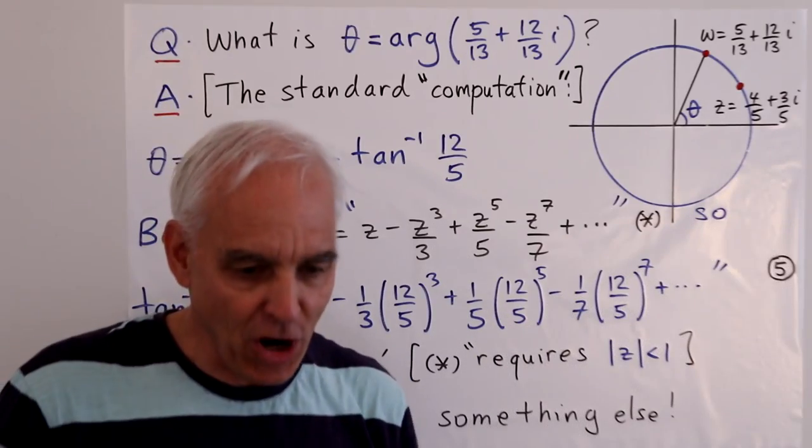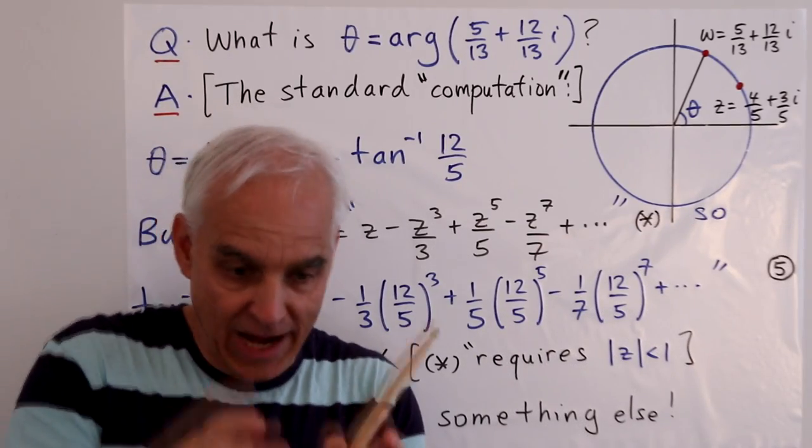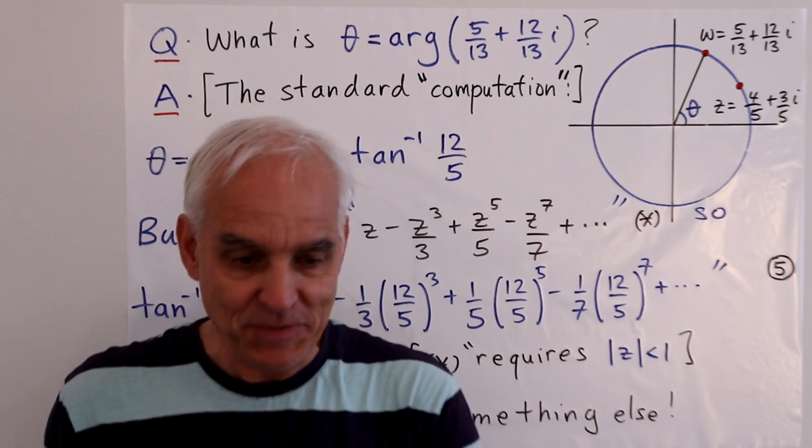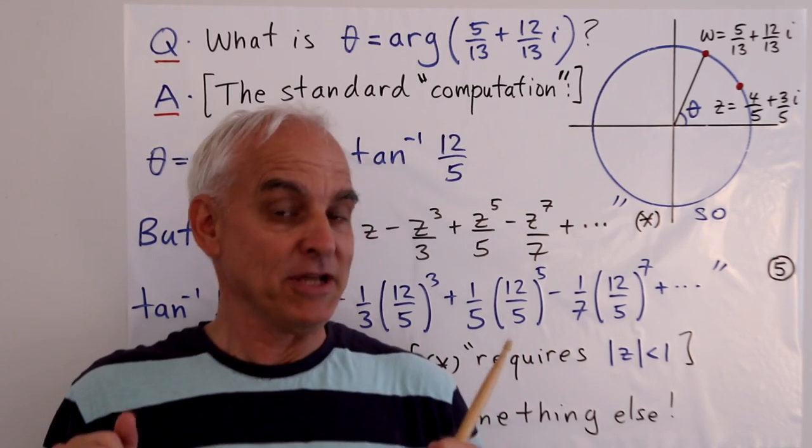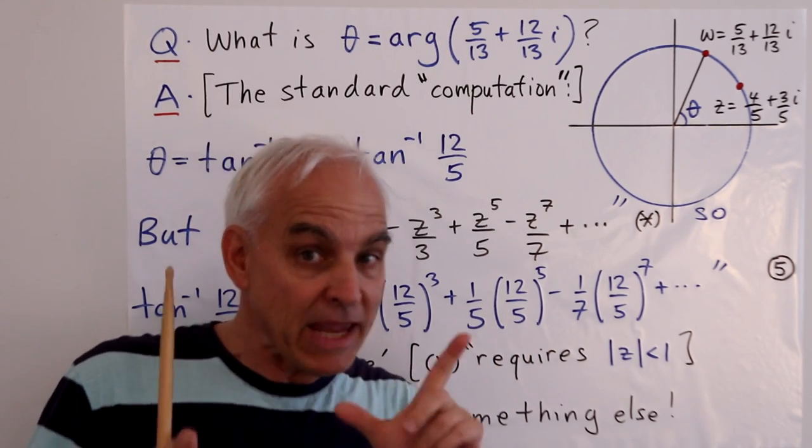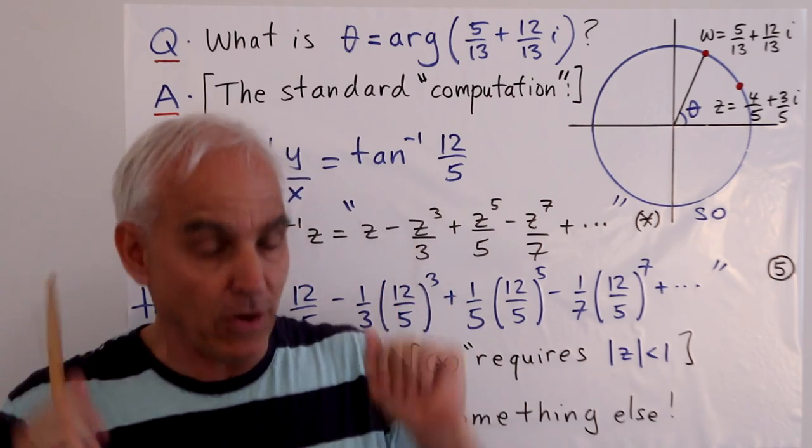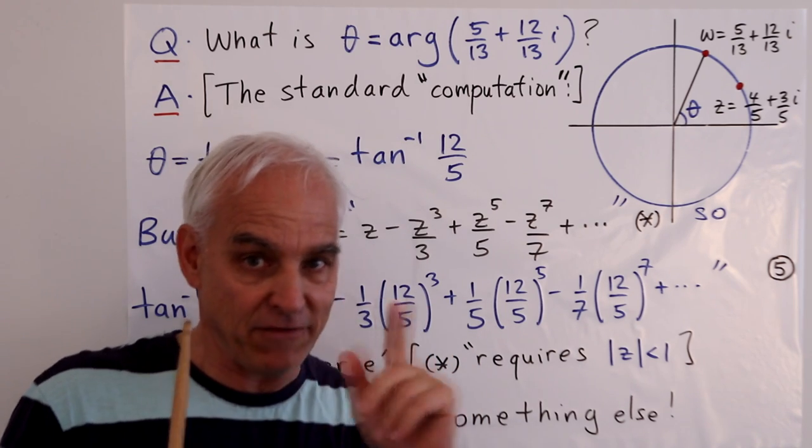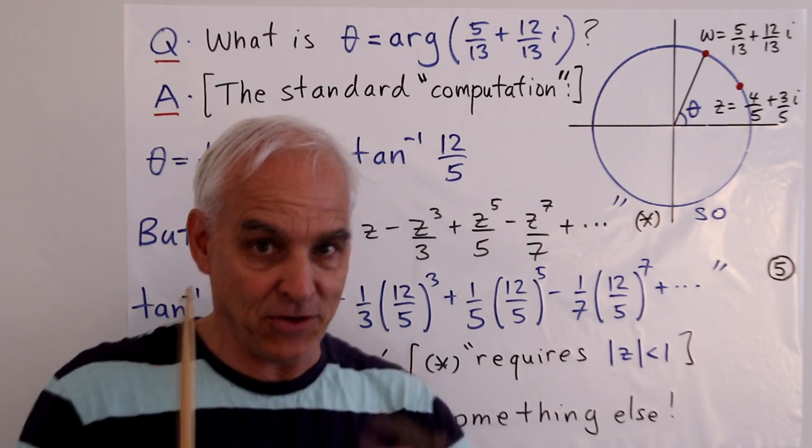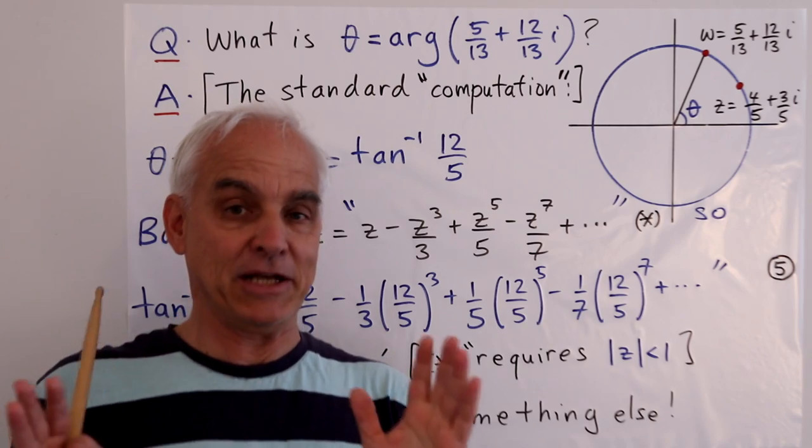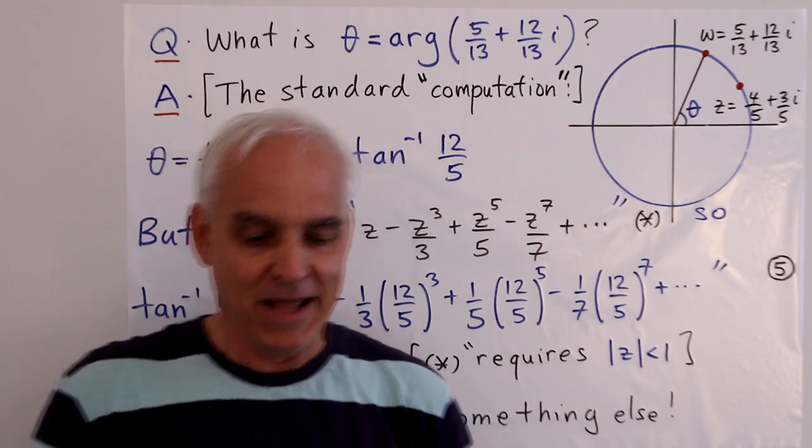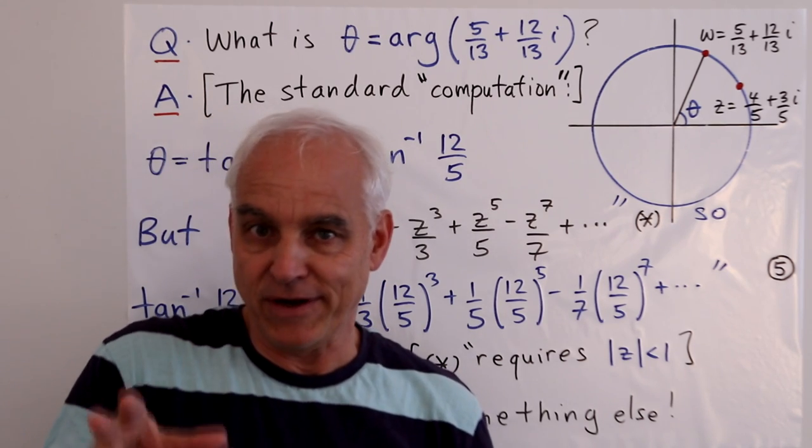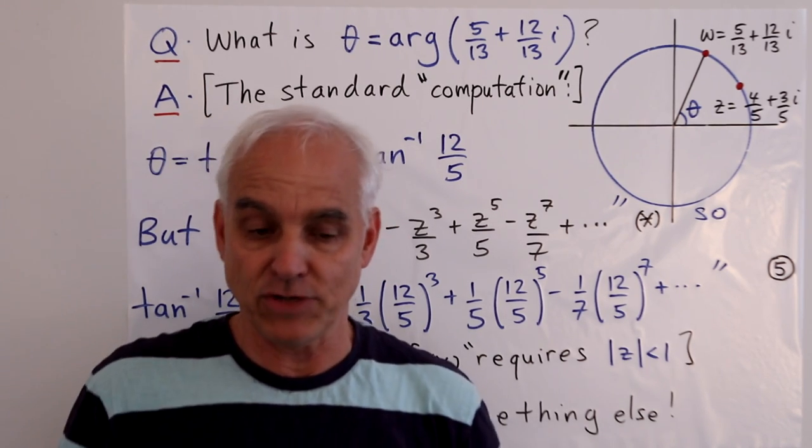Because angles are so difficult to get your hands on precisely, what happens in undergraduate mathematics around the world is that we all have this tacit agreement that we're going to stick to two baby triangles. The 1-1-√2 triangle and the 1-2-√3 triangle. The triangle with angles 45 and 45 degrees and 60 degrees and 30 degrees. Those are basically the only two triangles that we're going to use.